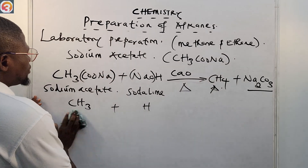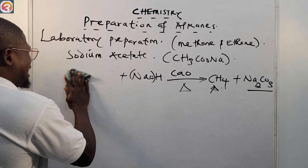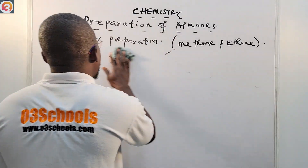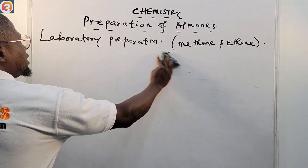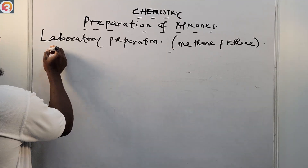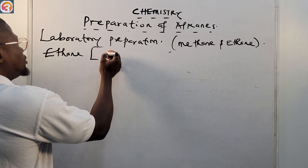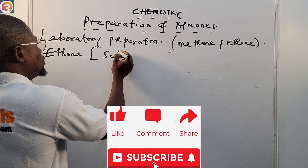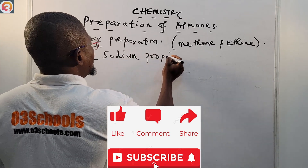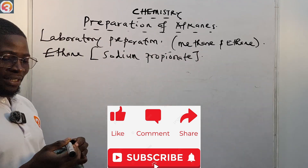Similarly, we can prepare ethane in the same way by using sodium propionate instead of sodium acetate.